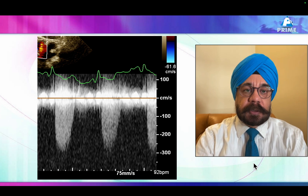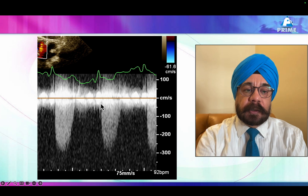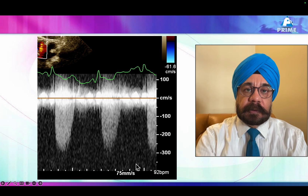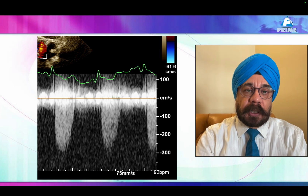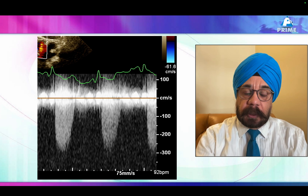Let's look at this case. This is a spectral CW Doppler across the LVOT and aortic valve. What you can see here is that the velocities are about three meters per second — in fact, less than three meters per second. So if I would ask you, you would say yes, the aortic stenosis is mild.